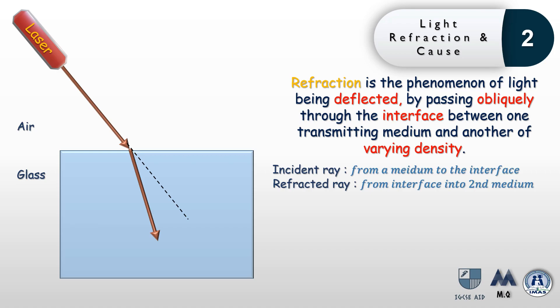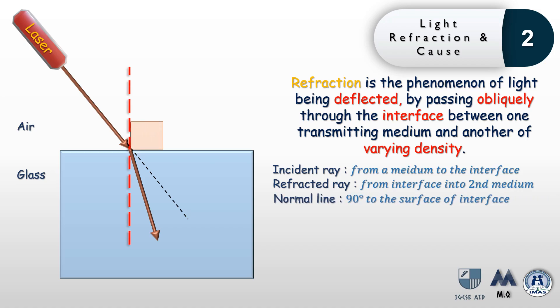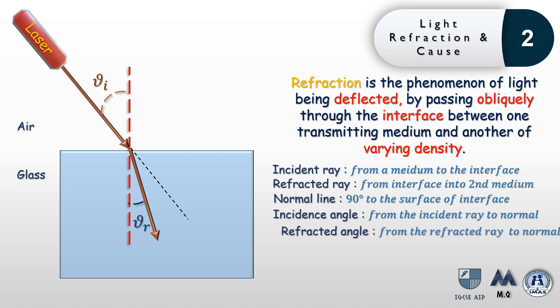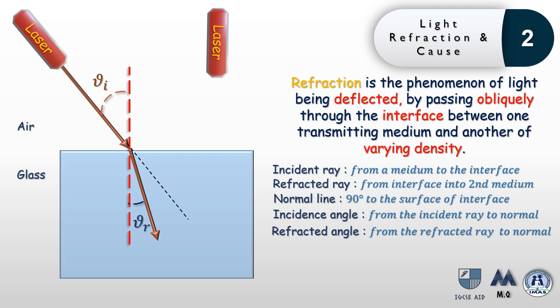To construct refraction, you need the normal line, which is a line 90 degrees to the surface. From that normal line we measure the angle of incidence — from the incident ray to the normal — and the angle of refraction — from the refracted ray to the normal. Refraction only occurs if the light passing through the interface between two mediums is oblique; there must be an angle of incidence greater than zero.